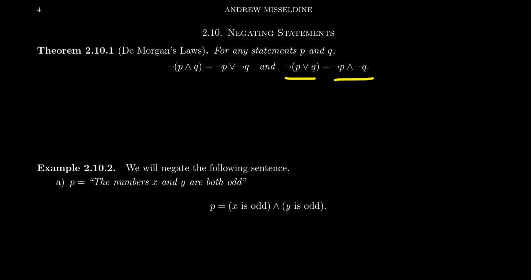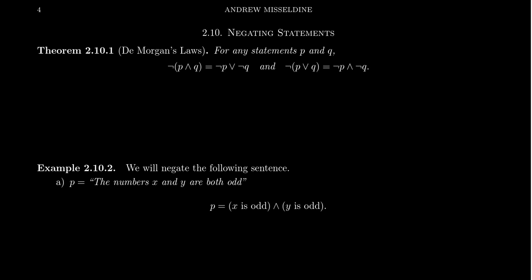One can prove that these statements are logically equivalent by, among other methods, drawing a truth table and seeing that the two statements have the exact same truth values for every possible combination of the primitives P and Q. I'll leave that as an exercise to verify using truth tables. The important thing to note is that when you negate an 'and' statement it becomes an 'or,' and if you negate an 'or' statement it becomes an 'and.'